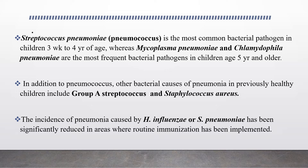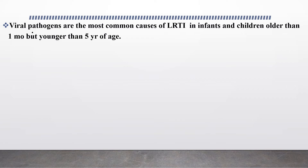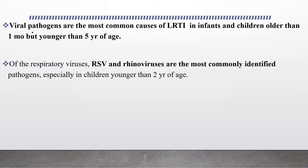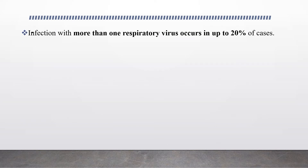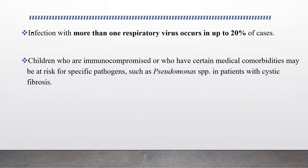The incidence of pneumonia caused by H. influenzae or Streptococcus pneumoniae has been significantly reduced in areas where routine immunization has been implemented. Viral pathogens are the most common cause of lower respiratory tract infection in infants and children older than one month but younger than five years of age. Rhinovirus is the most commonly identified pathogen, especially in children younger than two years. Other common viruses causing pneumonia include influenza virus, parainfluenza virus, adenovirus, and enteroviruses. Infection with more than one respiratory virus occurs in up to 20% of cases.